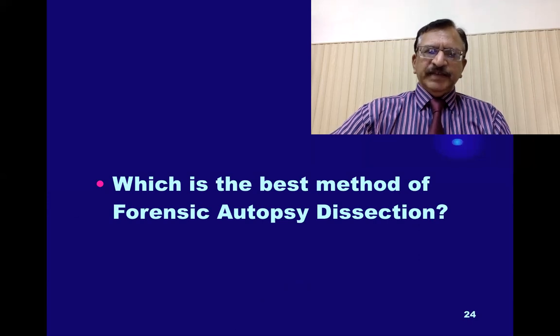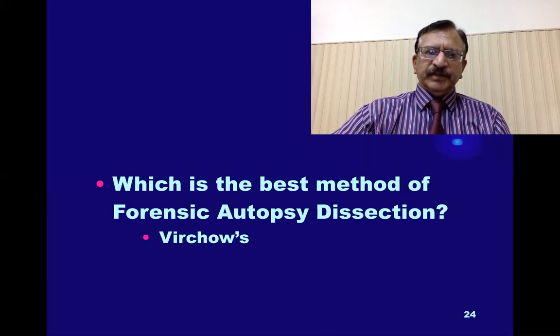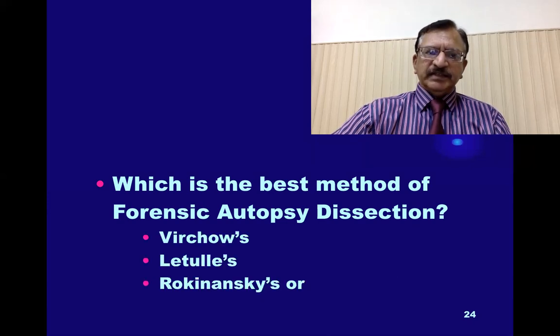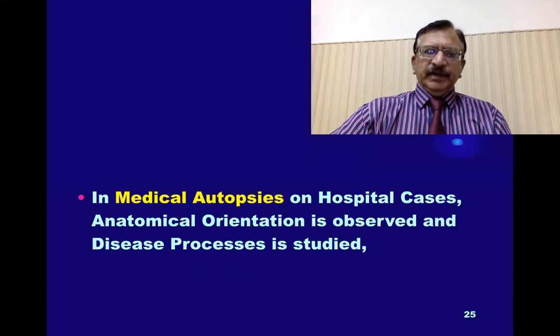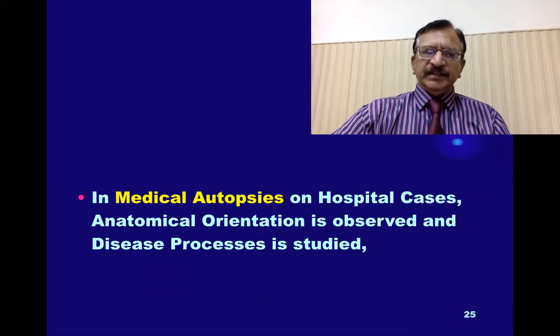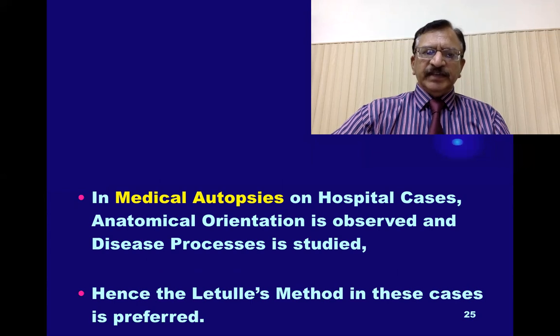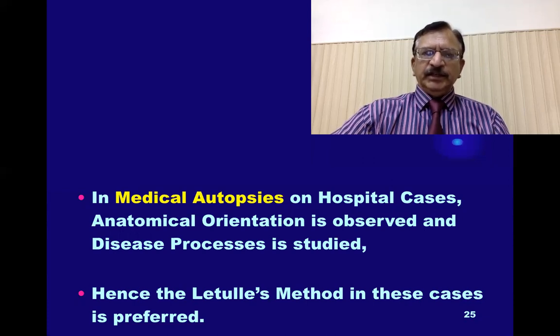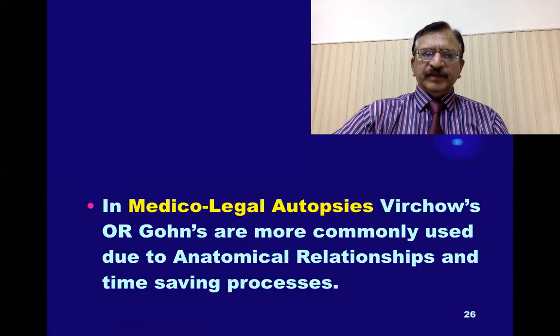Now, which is the best method of forensic anatomy dissection? Virchow's, Letulle's, Rokitansky's, or Ghon's? In medical autopsies on hospital cases, the anatomical orientation is observed and the disease process is studied, so the Letulle's method is preferred. In medical legal autopsies, Virchow's or Ghon's are the most commonly used techniques because they are used due to anatomical relationship and time-saving process.